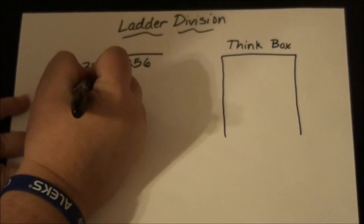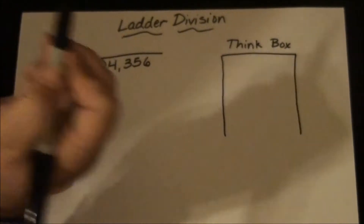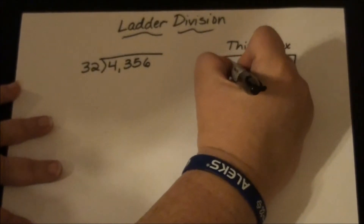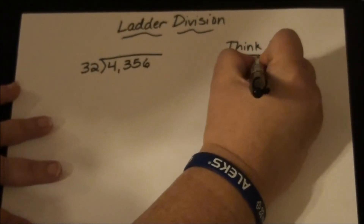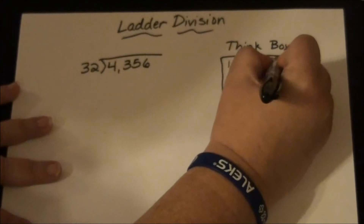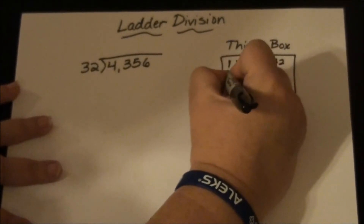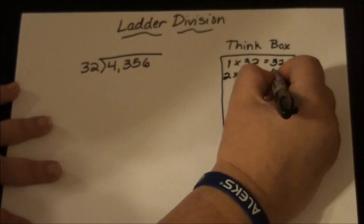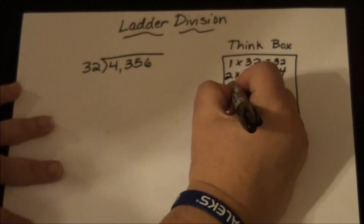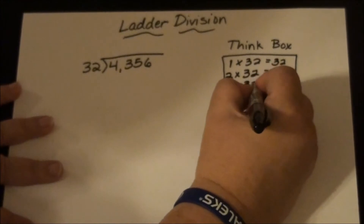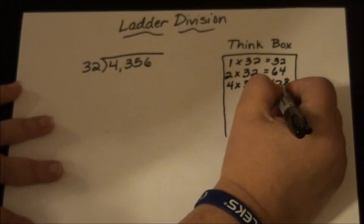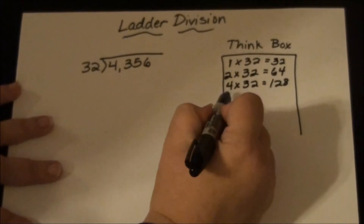You want to double the divisor as much as you can while it's easy, then there's another step for when it gets too hard. So: 1 times 32 equals 32, then double that — 2 times 32 equals 64, then 4 times 32 equals 128. Now 128 is going to be hard to double.